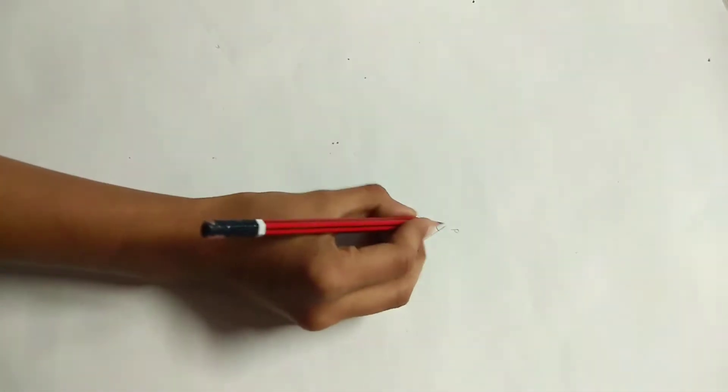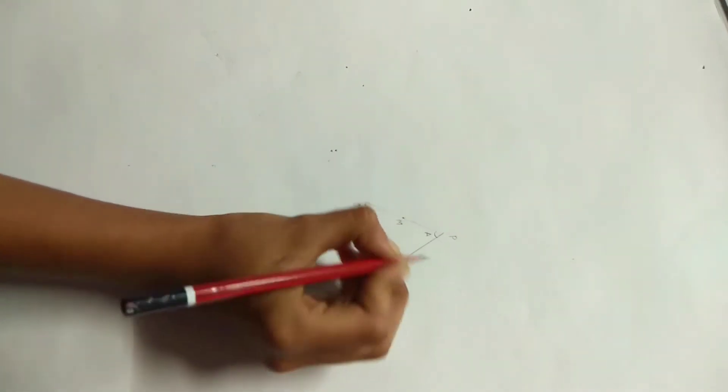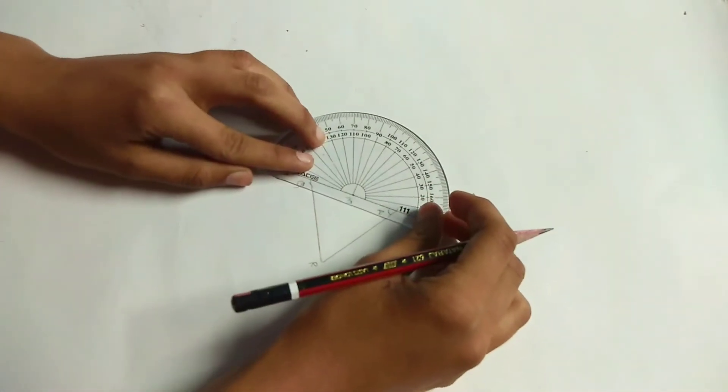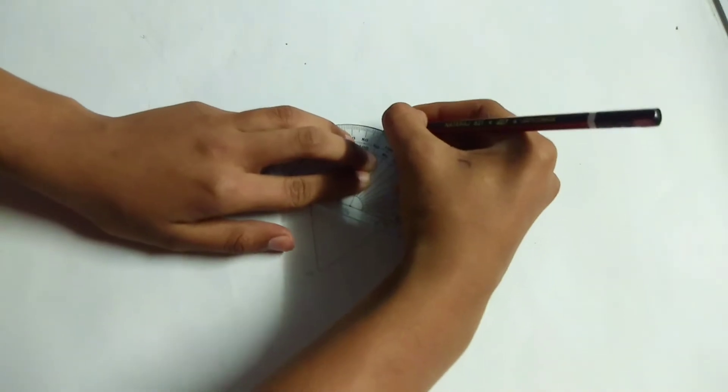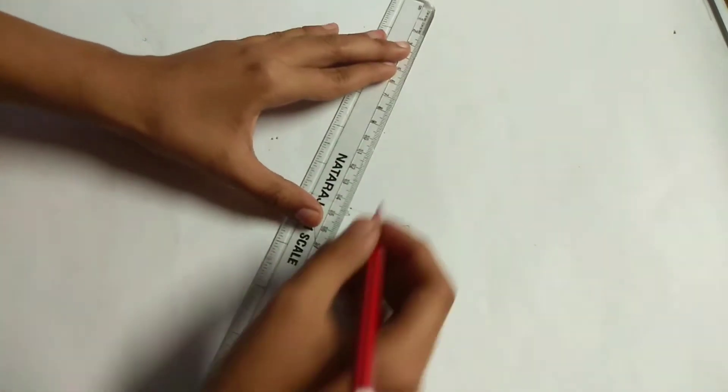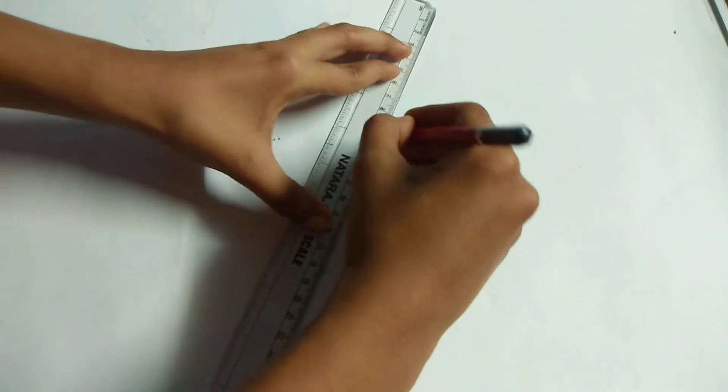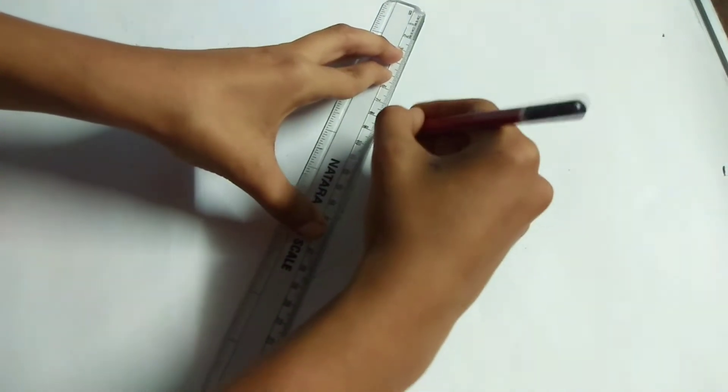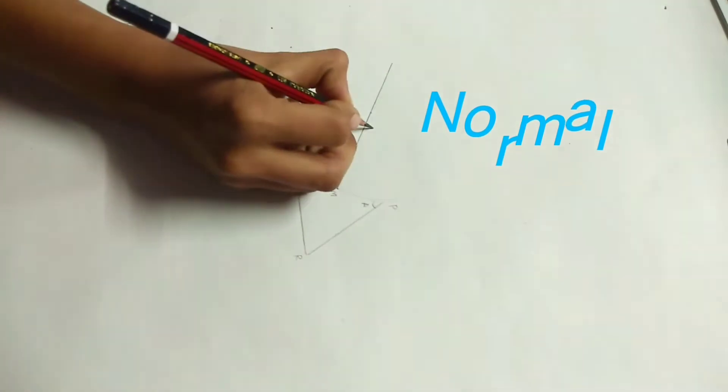Mark a point M on the side PQ. Draw a perpendicular at M using a protractor which is right angle. It becomes the normal to that surface.